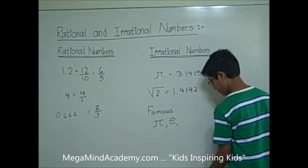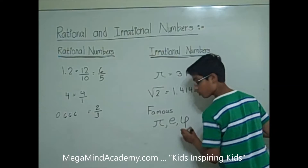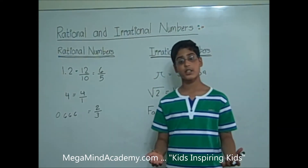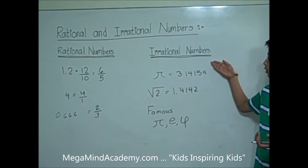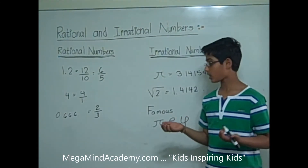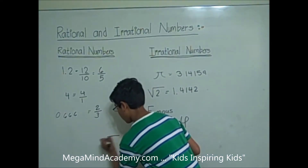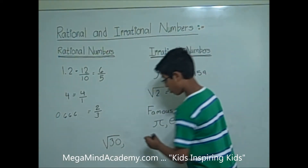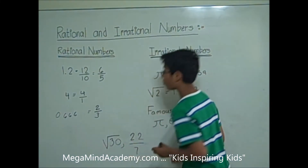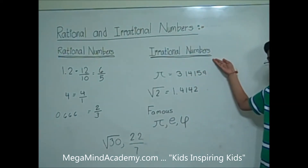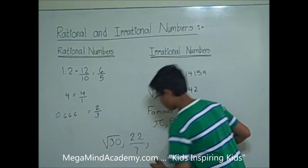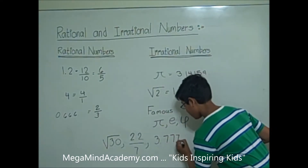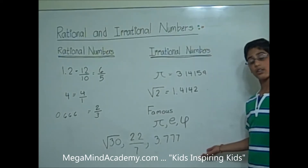Let's write the golden ratio a little better — the golden ratio. Now, let's find out whether some numbers are rational or irrational. We'll start with the square root of 30, then find out whether 22 over 7 is rational or irrational, and then whether 3.777... is rational or irrational.